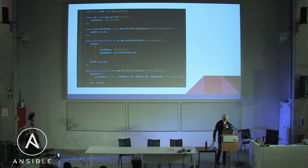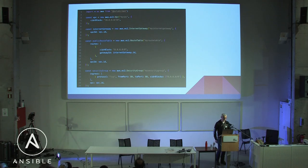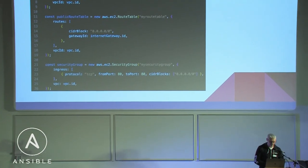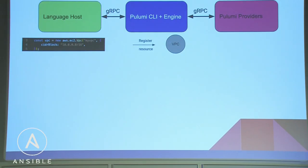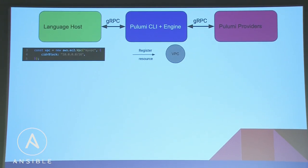Here's a small straightforward example for those who've worked with AWS. We create a VPC, an internet gateway, a route table linked to both the internet gateway and the VPC, and separately a security group also linked to the VPC. When we create the VPC, it sends a register resource request over the gRPC channel to our engine. In the very first phase, this is just sending instructions to the engine on how you want your resource graph to look.